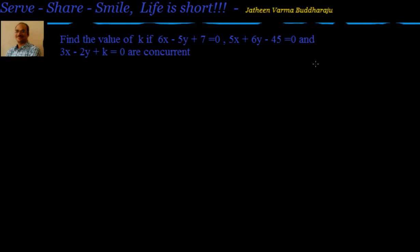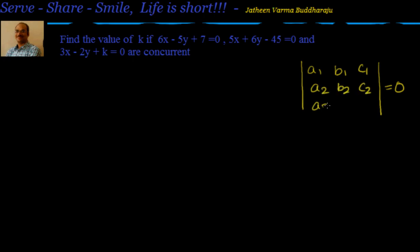The second method is using determinants — we have a determinant with elements a1, b1, c1, a2, b2, c2, and a3, b3, c3 equal to 0. So you substitute the values a1, b1, c1, a2, b2, c2, a3, b3, c3, and you know that the determinant should be equal to 0, so you can find out the value of lambda.